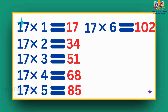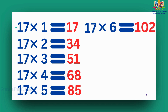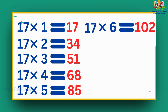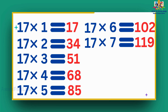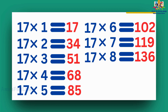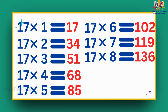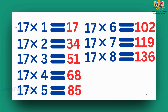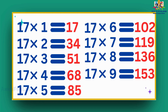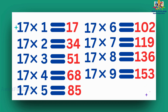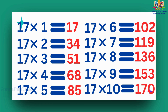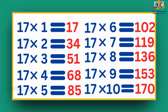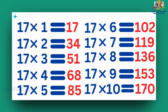17 sixes are 102. 17 sevens are 119. 17 eights are 136. 17 nines are 153. 17 tens are 170.